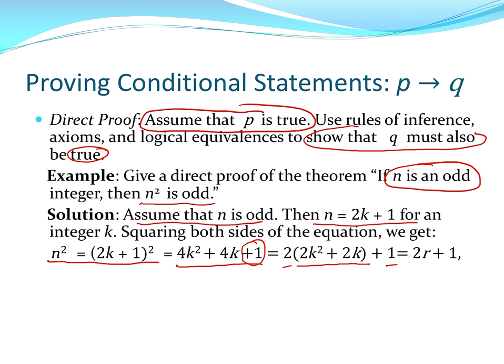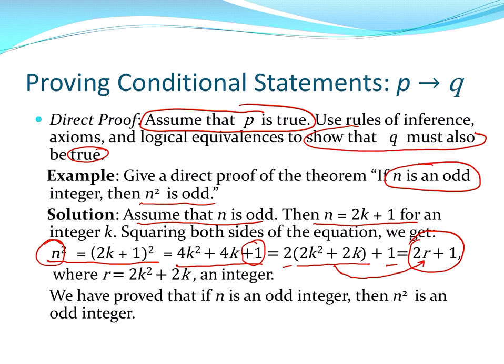That is n squared. And we can replace 2k squared plus 2k with r. And r is an integer so that n squared equals 2r plus 1. And r is an integer. Therefore, n squared is an odd integer. And we've proven it, leveraging the definition of an odd integer twice and doing some math.